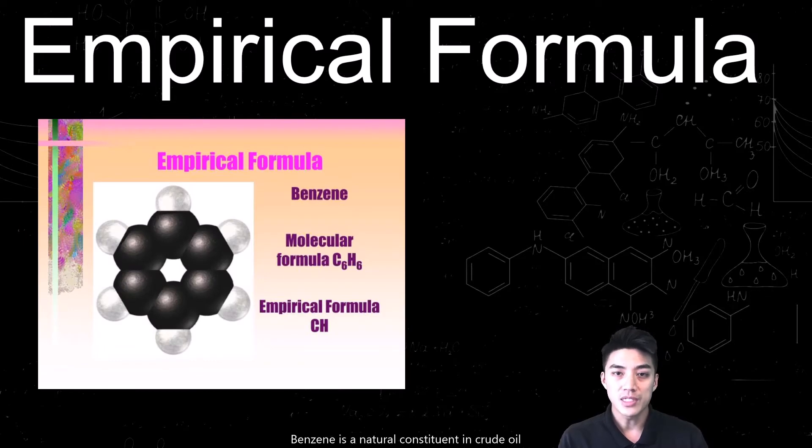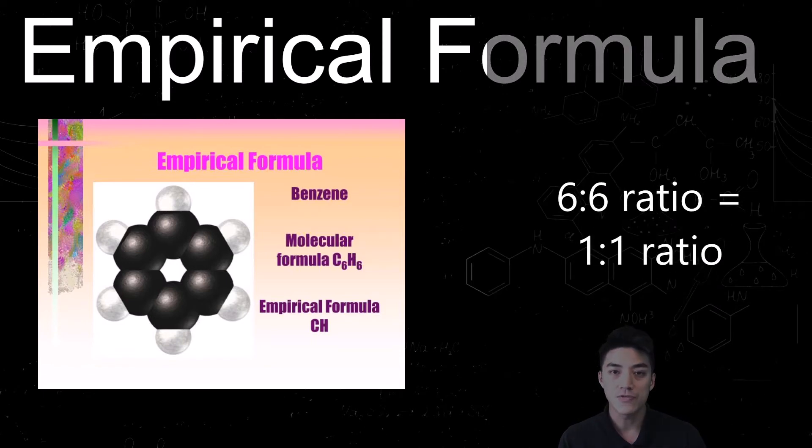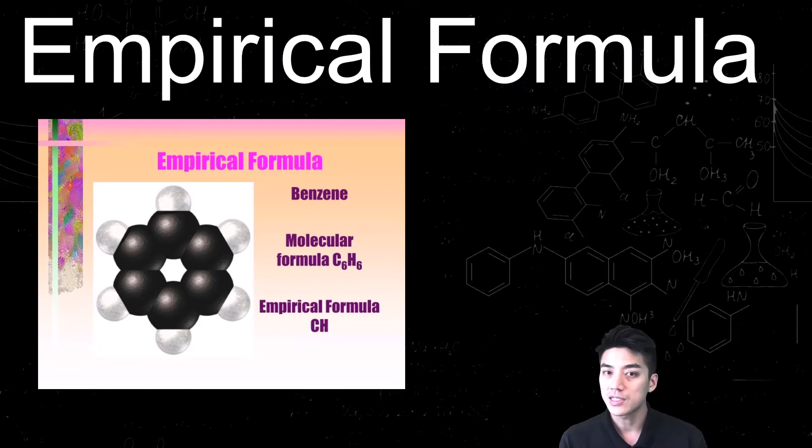In this example here, we're looking at benzene, which has the formula C6H6. So a 6 to 6 ratio simplifies to 1 to 1, so the molecular formula is C6H6, but the empirical formula is just CH.